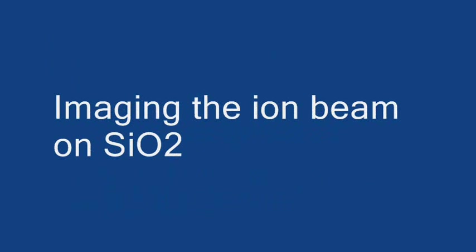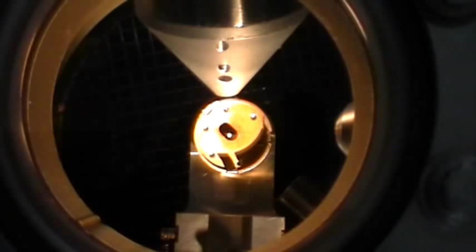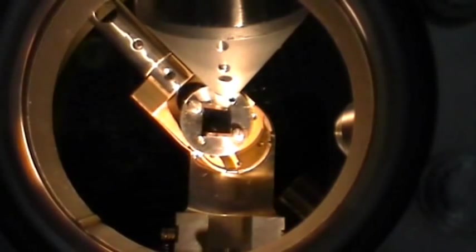The first method that we're going to look at is using silicon oxide and imaging the ion beam. Step one, let's load a piece of silicon oxide into the system. In this case, we're loading a piece that's about a centimeter square onto a one inch sample puck.